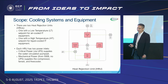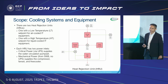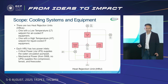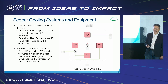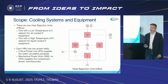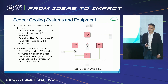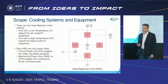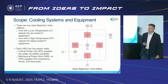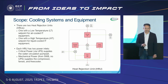There are two HRUs: one with a low-temperature set point for air-cooled IT equipment and another with a high-temperature set point for liquid-cooled IT equipment. Each HRU has two power outlets — one from critical power to feed the pump set for water circulation, and one from mechanical power to feed the compressors, fan sets, and free coolers. Cooling equipment is selected based on air and liquid cooling configurations.